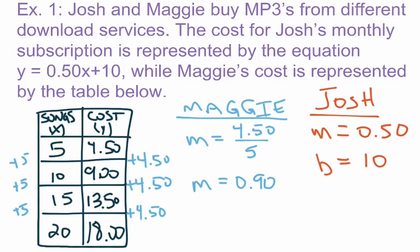Maggie's rate of change is 0.90 and Josh's rate of change is 0.50. For every song Maggie downloads she's paying 90 cents, while every song Josh downloads costs him 50 cents. But Josh has to pay a $10 membership fee — that's what b equals 10 represents. He pays $10 every month to maintain his download subscription. Maggie's monthly subscription fee, however, is still unknown.